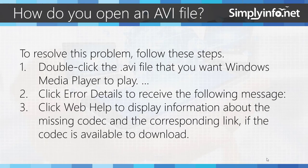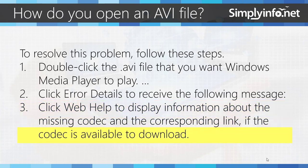How do you open an AVI file? To resolve this problem, follow these steps. Double-click the .avi file that you want Windows Media Player to play. Click Error Details to receive a message, then click Web Help to display information about the missing codec and the corresponding link if the codec is available to download.